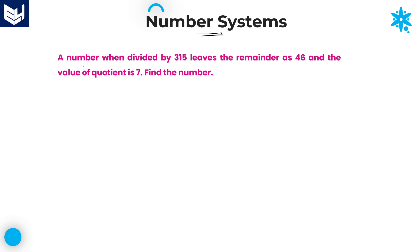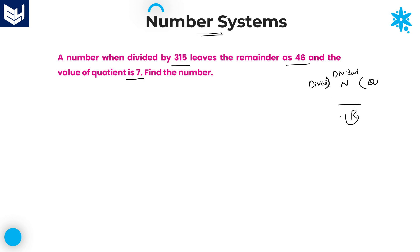See the first question given in this session. A number when divided by 315 leaves the remainder as 46 and the value of quotient is 7. Find the number. As we all know, when we are dividing any number, this value is called as divisor, this is called as dividend, this is called as quotient, and this one is remainder. The relationship between all these four terms is: dividend is equal to divisor into quotient plus remainder.